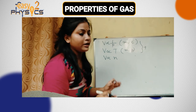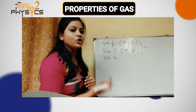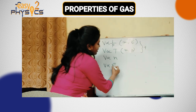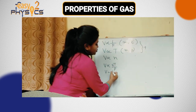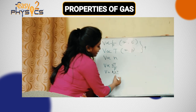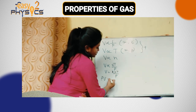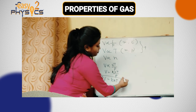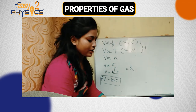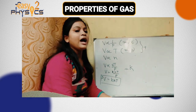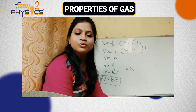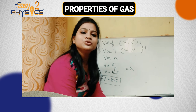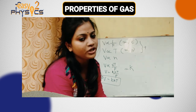The final combined formula gives PV equals nRT, where R is the gas constant. This is the gas equation — the ideal gas law.